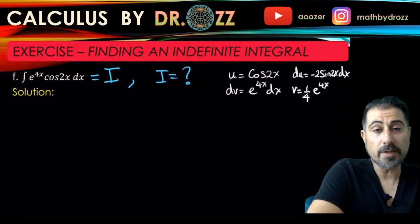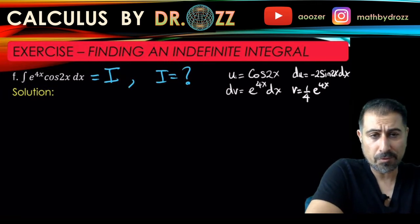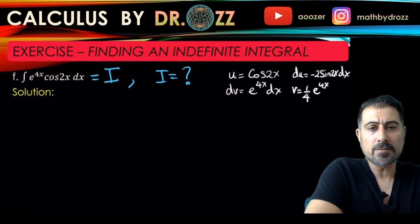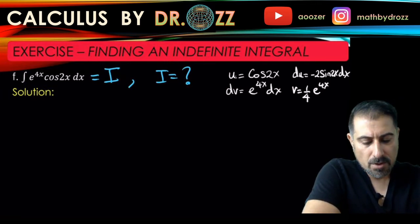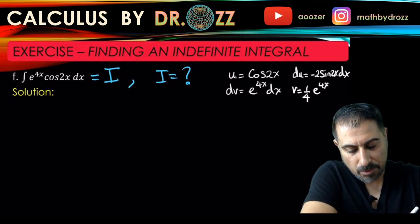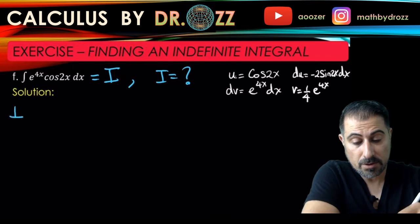That's a u-substitution problem. You can call u to be 4x to start with and you get down to one-fourth e to the 4x. Please pause the video and go with your own pace to get down to du and v. Now I'm going to write what I'm after.